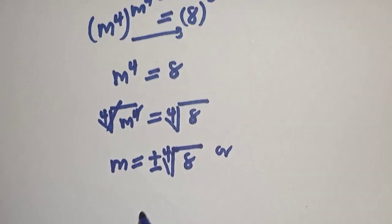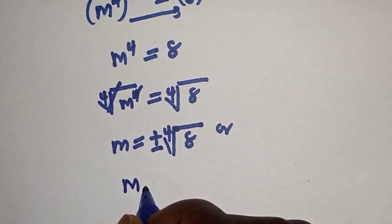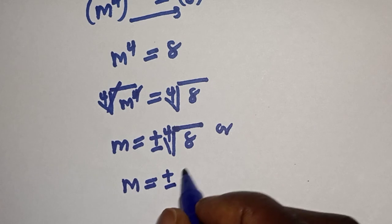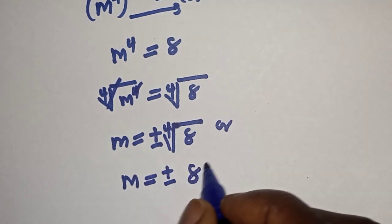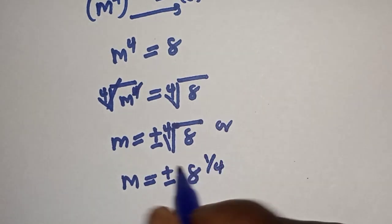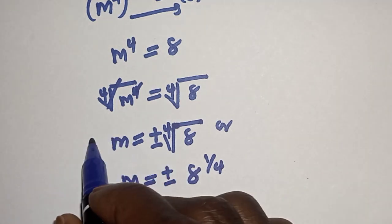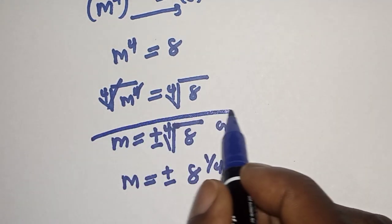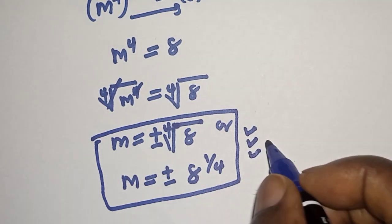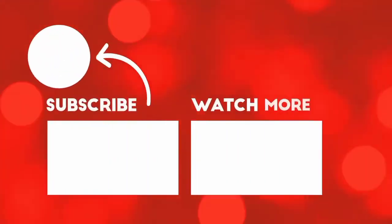So m is equal to plus or minus 8 raised to the power of 1 over 4, and this is the final answer. Like, share, comment and subscribe. Thank you, bye bye.